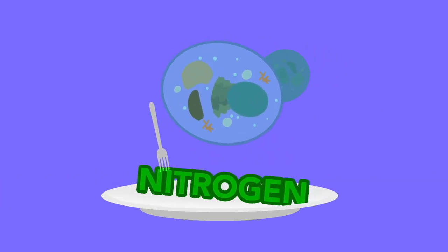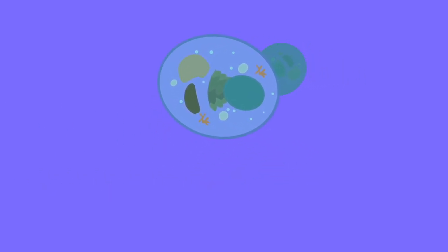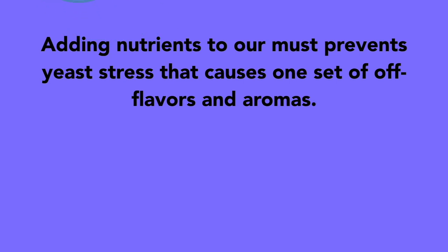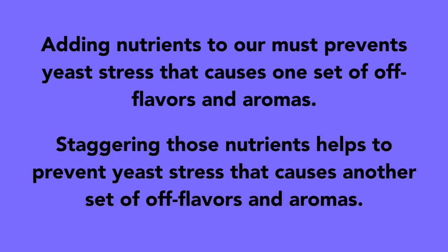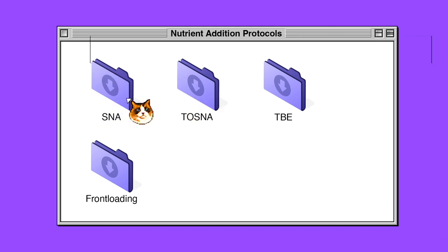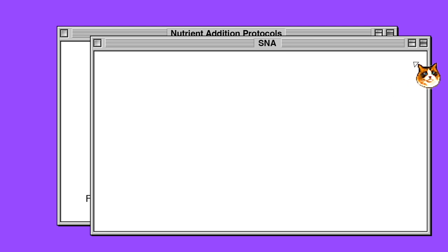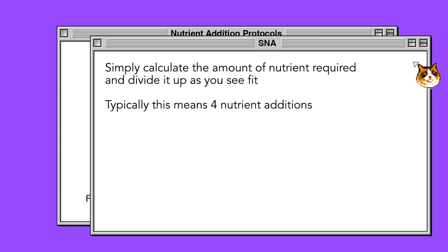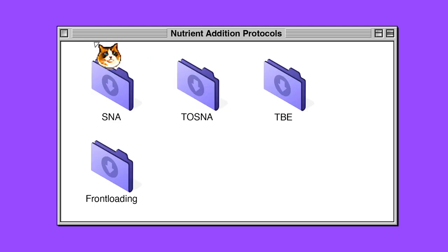For higher gravity musts, like those with a potential of 9% or higher, staggering provides more consistent, regulated primary fermentation. Adding nutrients to our must prevents yeast stress that causes one set of off flavors and aromas, while staggering those nutrients helps prevent yeast stress that causes another set. Common nutrient addition protocols include staggered nutrient additions — the classic mead nutrient protocol. Mead makers simply calculate the amount of nutrient required for the must and divide it up as they see fit. Most commonly this means four staggered additions of equal portions, though some will opt for larger additions at the beginning of primary and step down toward the final addition. This regimen is simple, allows for a bit of whim, and is effective without overcomplicating the process.